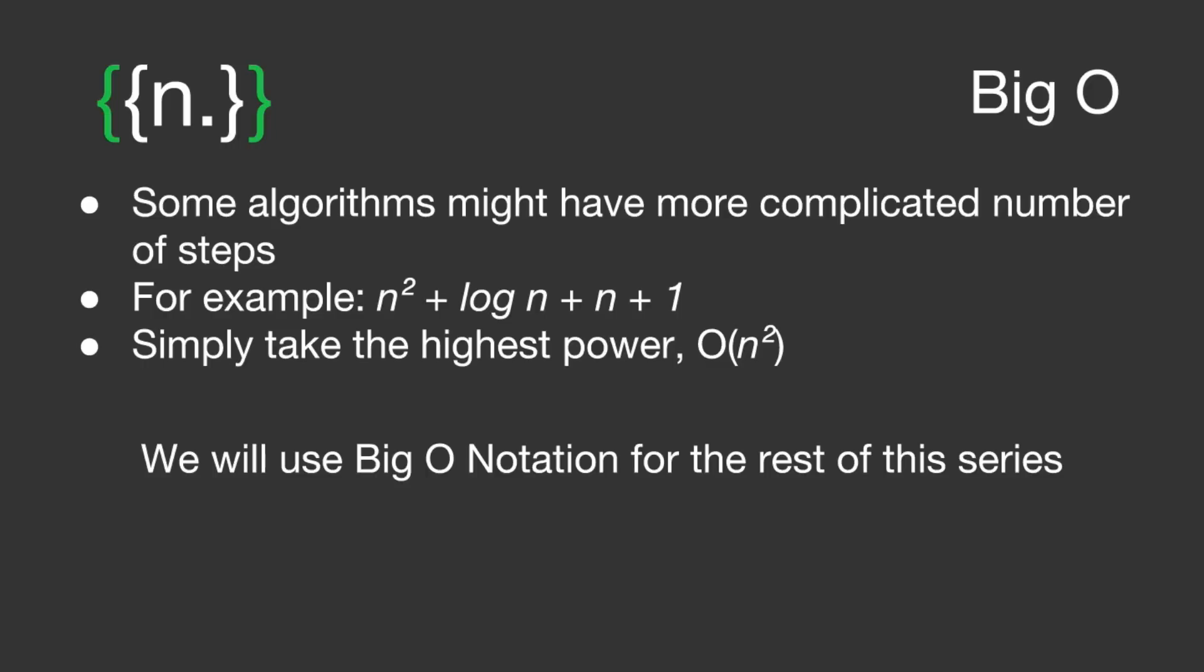The number of steps in some algorithms might be more complicated. It might be the number squared plus log n of the number plus n plus 1. So when we talk about the order of an algorithm, we just take the highest power. So this example would be order n squared.